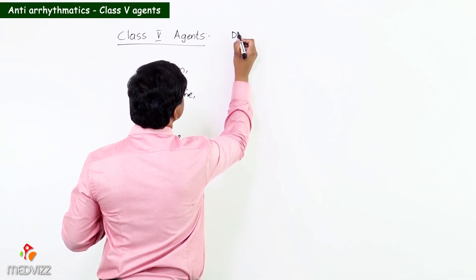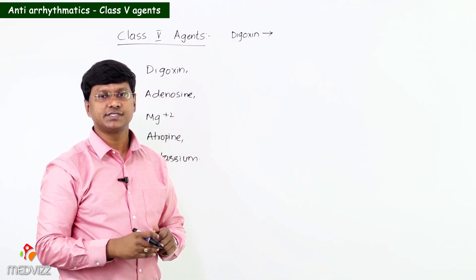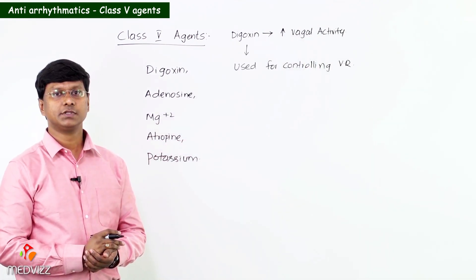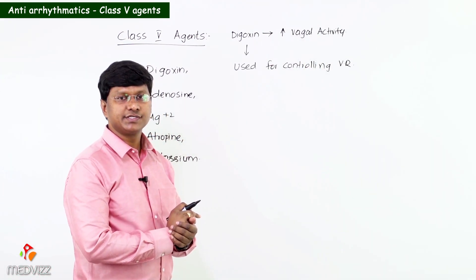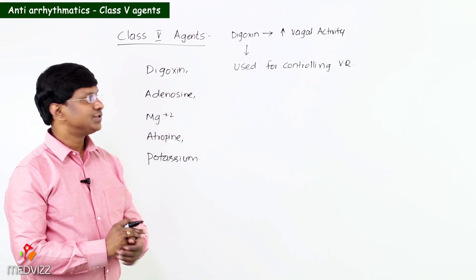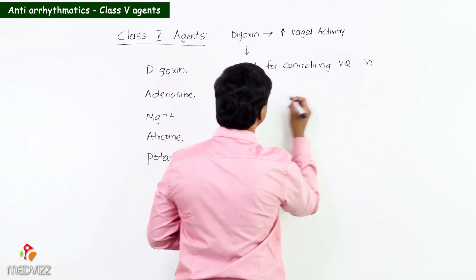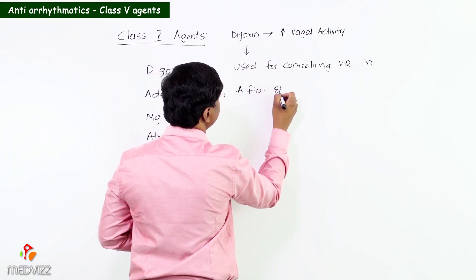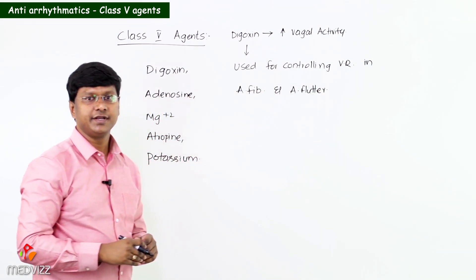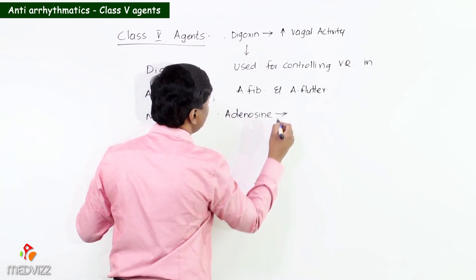Digoxin increases the vagal activity. Because it increases the vagal activity, it is used for controlling the ventricular rate in atrial fibrillation as well as atrial flutter.